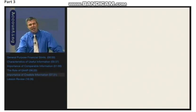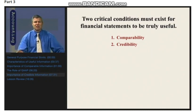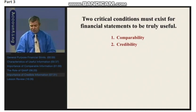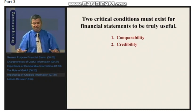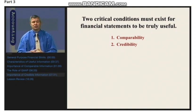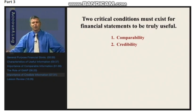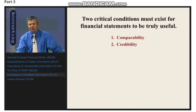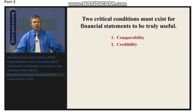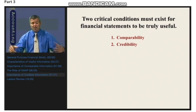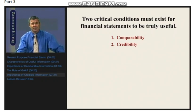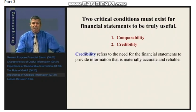Now, the second condition that must exist in financial statements for them to be truly useful to investors and creditors — and let's make sure we've got our focus here: what we're talking about is financial accounting, the process of trying to create information that investors and creditors can use in making investment decisions intelligently. We said that information would be better if it's governed by common rules of accounting to create comparability. But even if we're using common rules, what if the numbers in the financial statements just aren't right? These financial statements not only need to be prepared in accordance with generally accepted accounting principles to create comparability, but they also have to be accurate. Credibility refers to the need for financial statements to provide information that is materially accurate and reliable.